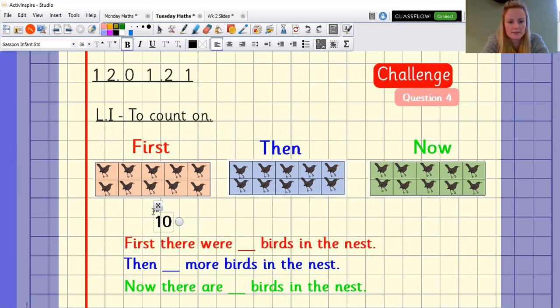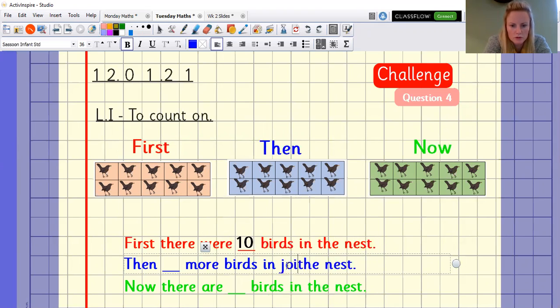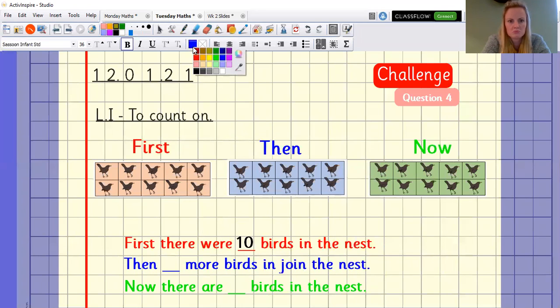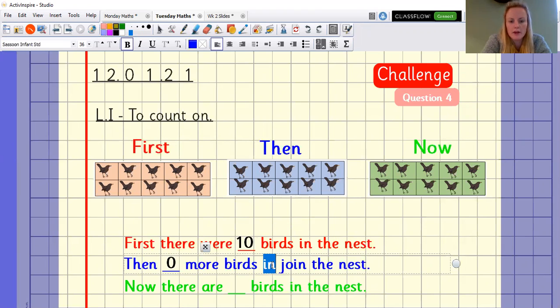First, there were 10 birds in the nest. Then more birds joined the nest. That should say join the nest. Oh, is there any birds joining the nest? No. So what do I need to write? Yes, I need to write zero. Then zero more birds join the nest.